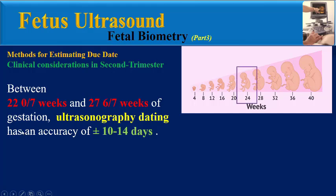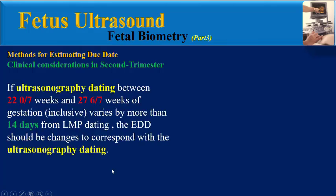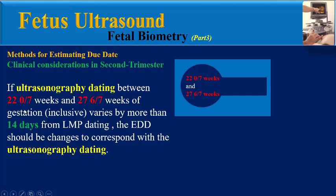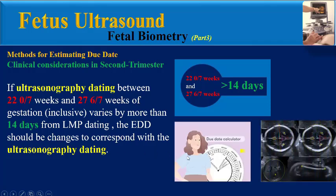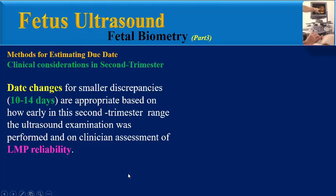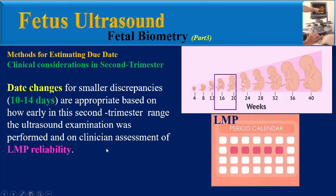Dating between the beginning of 22 weeks and the end of 27 weeks of gestation: ultrasonographic dating has an accuracy of plus or minus 10 to 14 days. If ultrasonographic dating between 22 and 27 weeks of gestation varies by more than 14 days from LMP dating, the EDD should be changed to correspond with ultrasound dating. Date changes from smaller discrepancies of 10 to 14 days are appropriate based on how early in the second trimester the ultrasound was performed and on clinical assessment of LMP reliability.